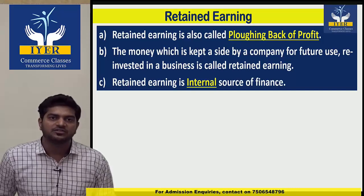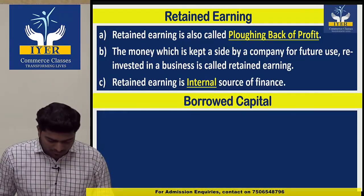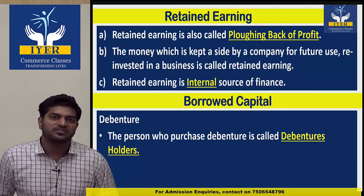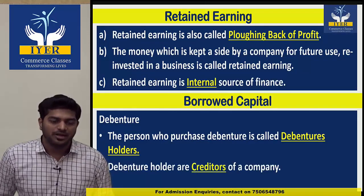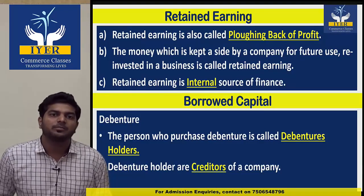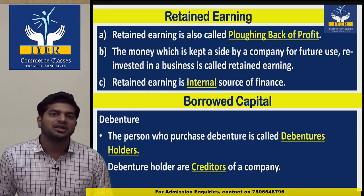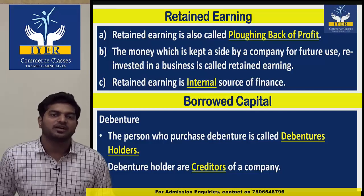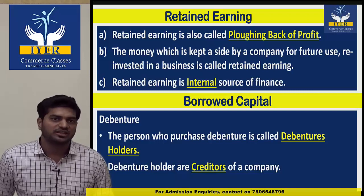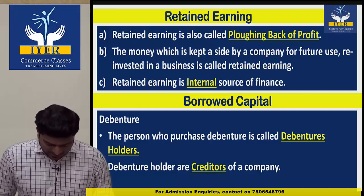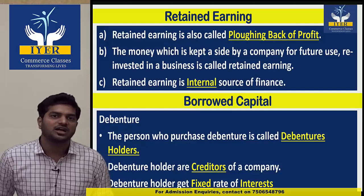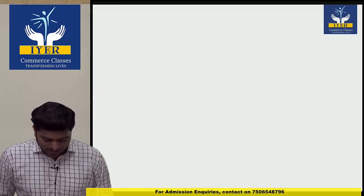Next is borrowed capital. First component is debenture. The person who purchases debenture is called a debenture holder. Debenture holders are creditors of a company — because they are outside the company and the company must repay them one day. Since we borrow money, we must pay interest on it. Therefore, debenture holders get a fixed rate of interest.